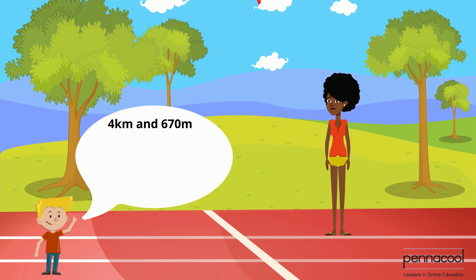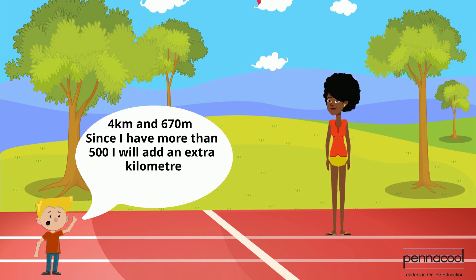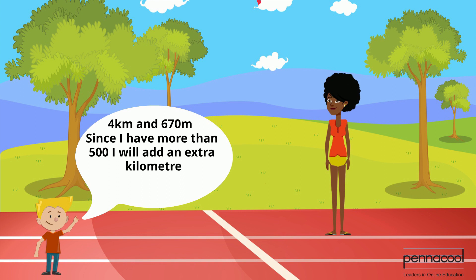Hugo sees that he has more than 500 meters after separating the 4,000 from the 670 meters, so he adds the extra kilometer. So his approximate value is 4 kilometers plus 1 kilometer, giving 5 kilometers.